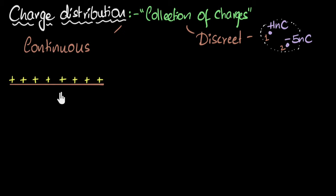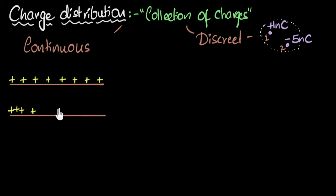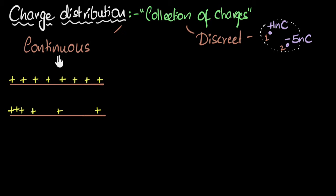I can have that same wire with the same total charge — say a hundred coulombs — but distribute it continuously in a different way. In one case, the charges are equally crowded everywhere. In another case, the charges are more crowded at one end and less crowded at the other, even though the total charge is the same. This leads to an important concept: how crowded the charges are.